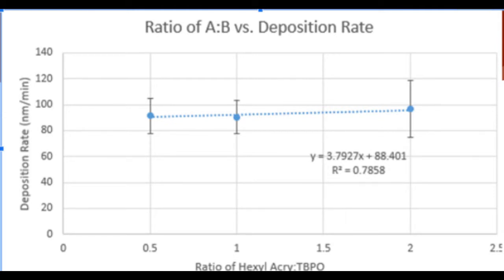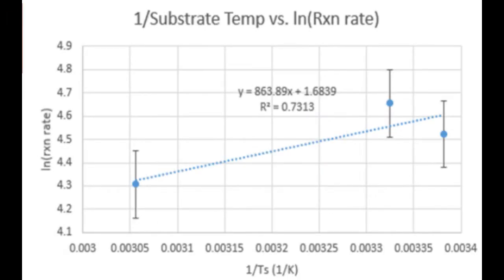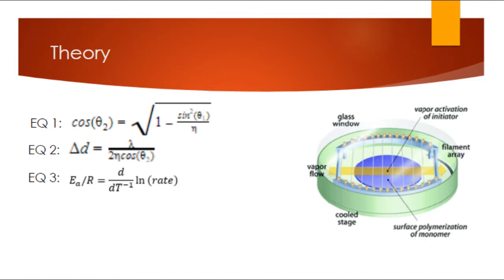The group then compared the natural log of deposition rate to the inverse of the substrate temperature in Kelvin. The positive trend shown in this dataset is statistically significant at a flow rate ratio of 1 to 1. The error shown is for the standard deviation in the deposition rate. The effect of filament temperature on deposition rate was not studied in this experiment, as the filament temperature was held constant. With this information, we can use equations 2 and 3 to calculate the activation energy for this reaction.